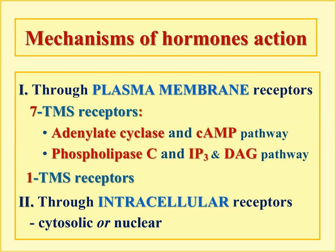There is a certain difference: the plasma membrane receptors group included three types — 7TMS, 1TMS, and ligand-gated ion channels. As you can see here, ligand-gated ion channels are absent because hormones mostly do not use these receptors. Ligands for ligand-gated channels belong to the group of neurotransmitters such as acetylcholine, glutamate, or gamma-aminobutyric acid. Neurotransmitters are released not into blood, but into the synaptic cleft of synapses.